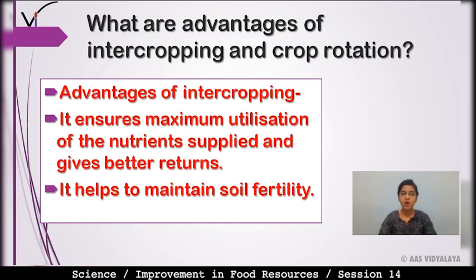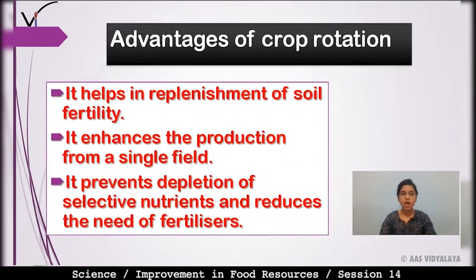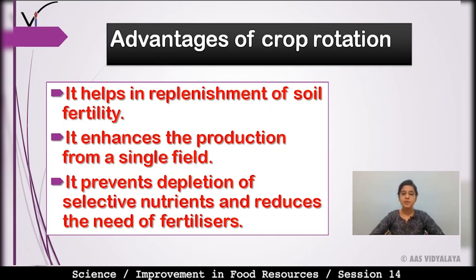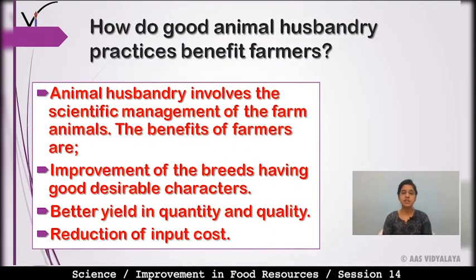Intercropping ki wajah se soil fertility bhi maintain rehti hai. For crop rotation: it helps in replenishment of soil fertility. It enhances the production from a single field — different types of crops produce kar sakti hai, economical values bhi badhegi, production rate bhi badhega. It prevents depletion of selective nutrients and reduces the need of fertilizers.